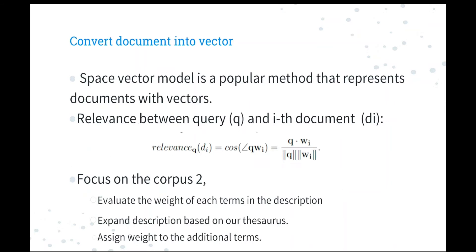In information retrieval systems, space vector model is a popular and successful model that represents documents with vectors. With this model, the relevance between query and documents is defined as the cosine between two vectors. We also use this model in our system. In the following part, we want to expand the description with relevant terms and convert them into vectors. To do this, we will first evaluate the weight of each term in the description and then expand the description based on the thesaurus and assign weight to the additional terms.